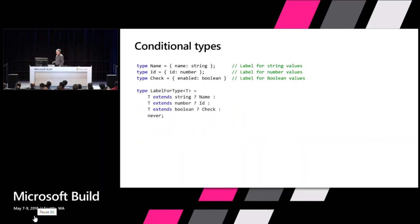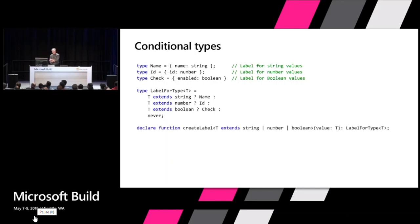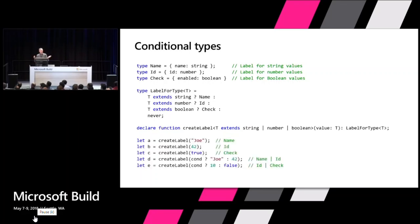With conditional types we can declare a LabelFor type: give me a T and when T extends string give me back Name, when T extends number give me Id, when T extends boolean give me Check, otherwise never. Now I can declare createLabel as just taking some T that is a string or number or boolean and returning LabelFor<T>. I don't have to write overloads — it just comes out of the types. If you give me 'joe' you get Name, and if you give me 'joe' or 42 well that's a string or number so you get Name or Id back.